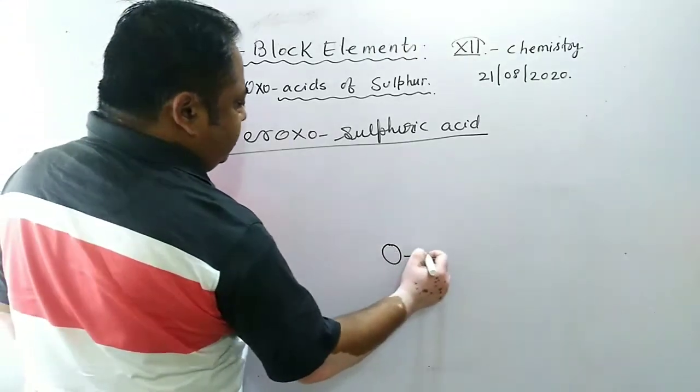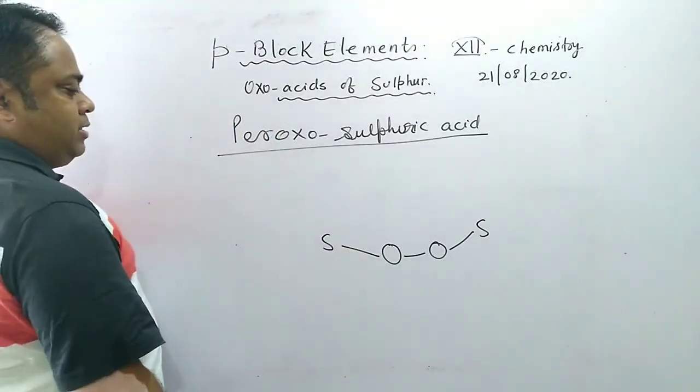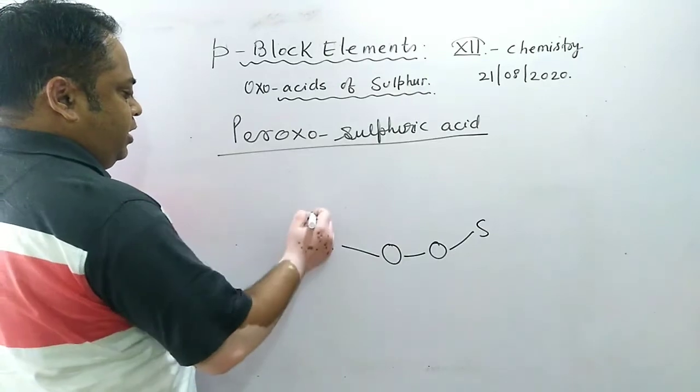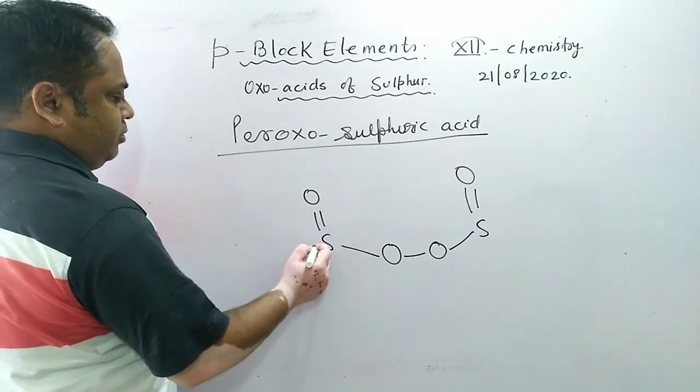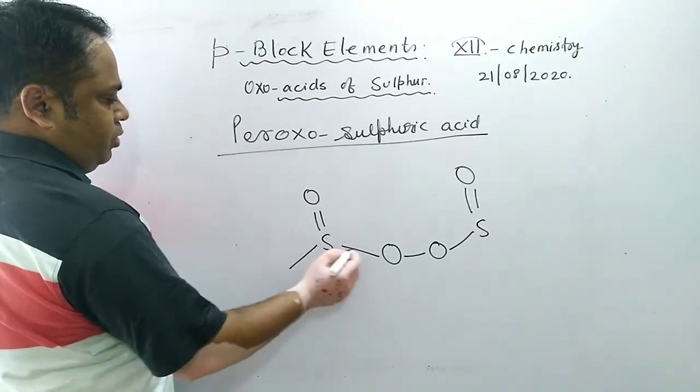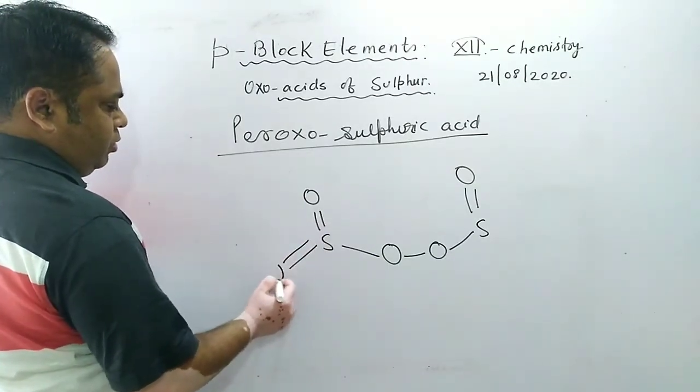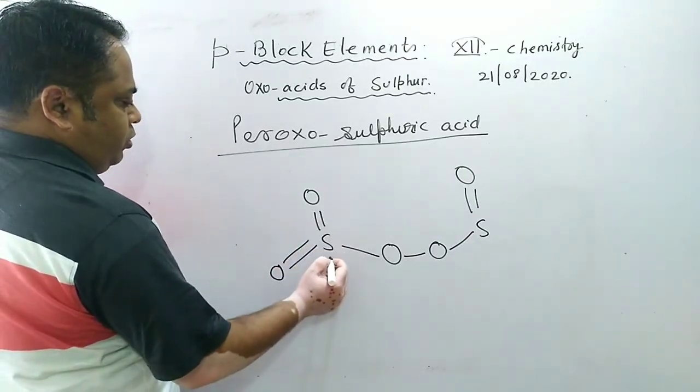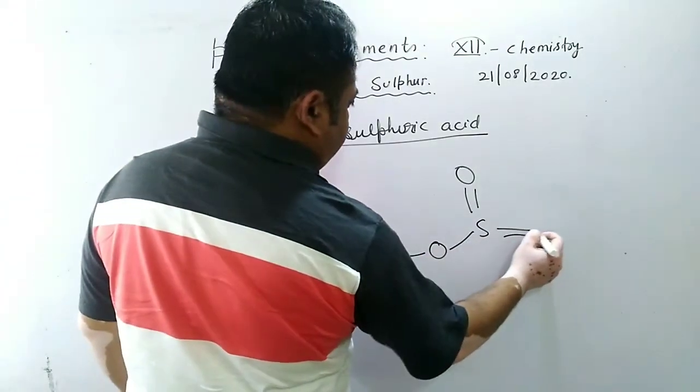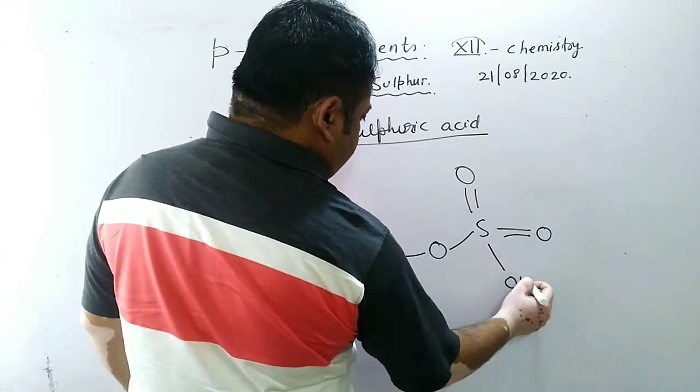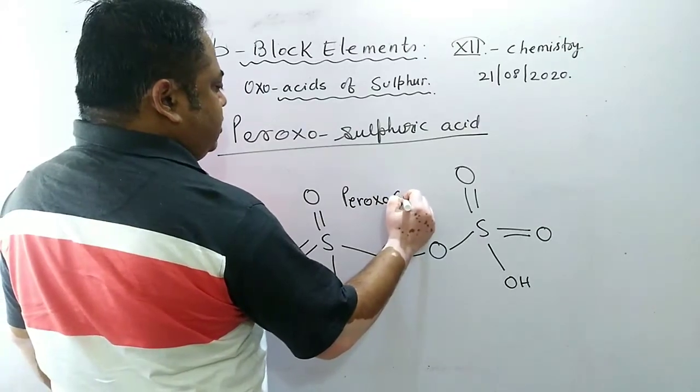Next is peroxosulfuric acid. How is it formed? First of all, a peroxide linkage will be there - this is a peroxide linkage. Now connect it with sulfur. Now six bonds have to be satisfied. One bond is already there, one bond with double bond oxygen - one, two, three is done. Then one, two, three, four and one more - one, two, three, four, five and one more.